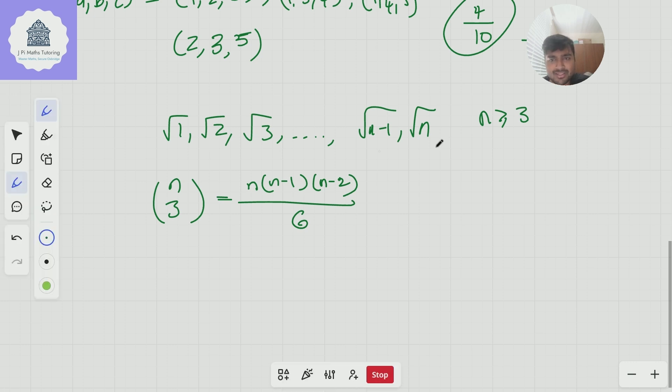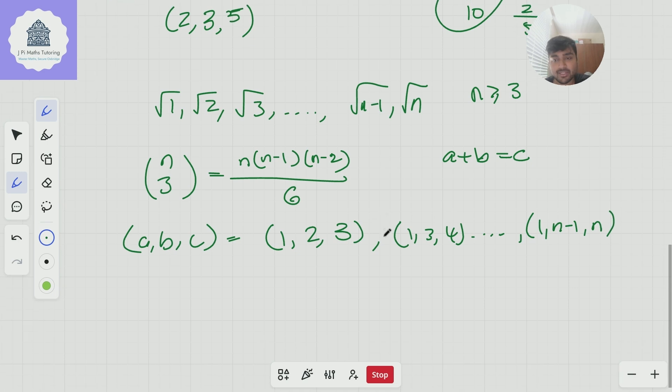Okay and now how many ways are there to pick kind of two of these numbers here such that the third number is also you know so that we satisfy this a plus b equals c condition. Well we can do kind of a similar thing we can say a solution is one two and then that would have to be three then we can go one three four and we can continue like this until we get to one n minus one n like so.